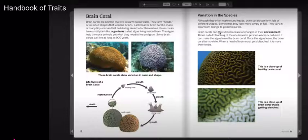Some brain corals can live as long as 900 years. These brain corals show variation in color and shape. Life cycle of a brain coral.